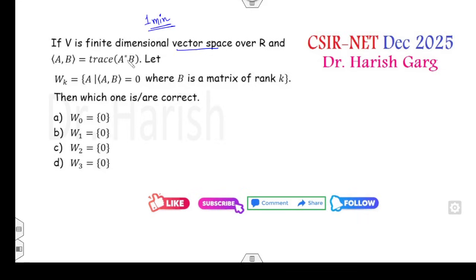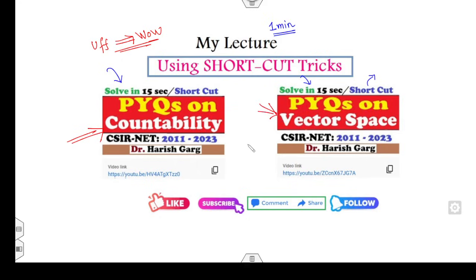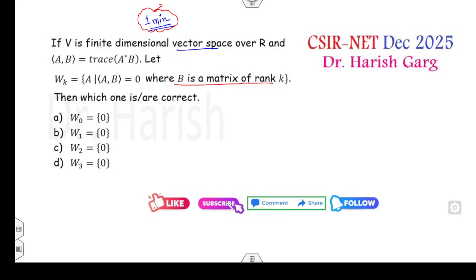Look at the second one. If V is a finite dimensional vector space over R, and (A,B) = trace(A* B), let W_k where B is matrix of rank k. You can get maximum one minute if you have watched my vector space lecture, because every lecture I have made with shortcut tricks in the easiest way. Your reaction will definitely change from uff to wow. V is a finite dimensional vector space. What comes to mind? Matrix. So I can choose V is M_n(R), the vector space over R.